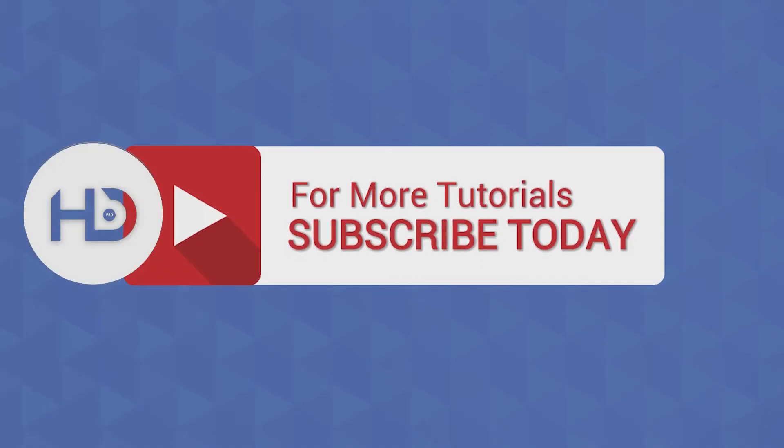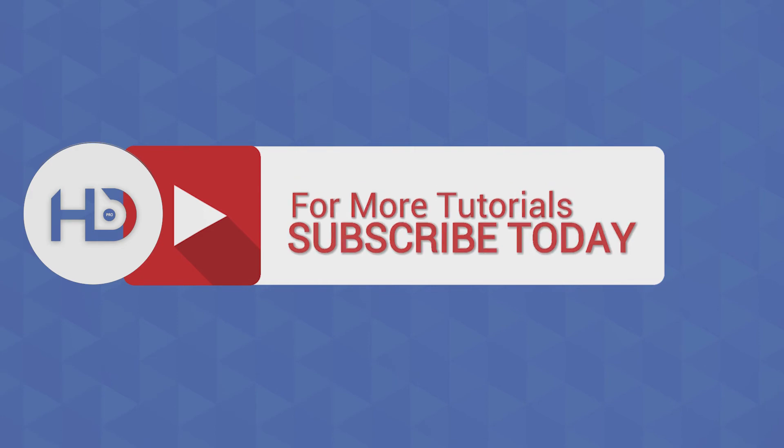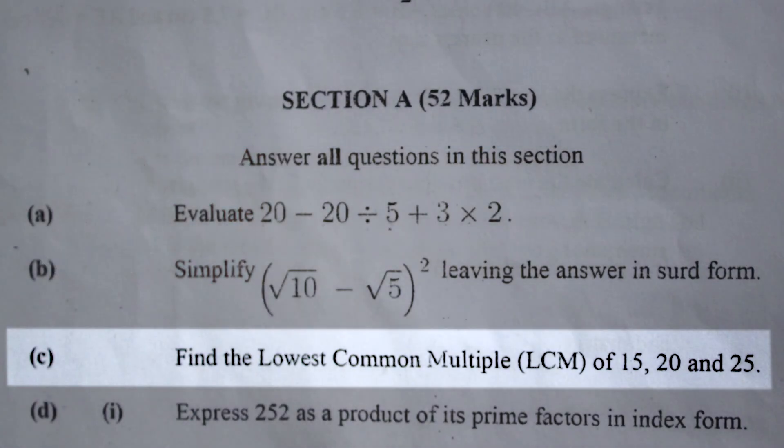Question 1C, find the lowest common multiple LCM of 15, 20, and 25. So we're going to write 15, 20, and 25 as product of their prime factors.